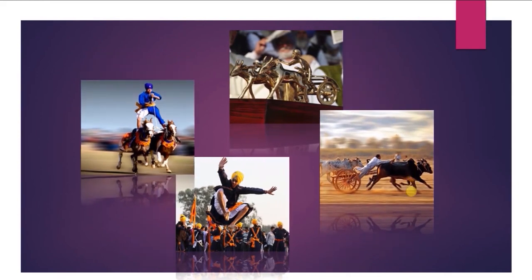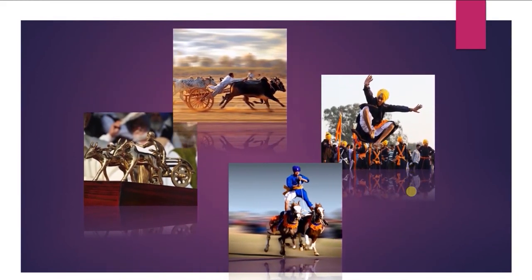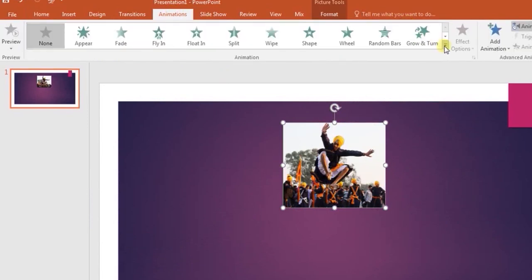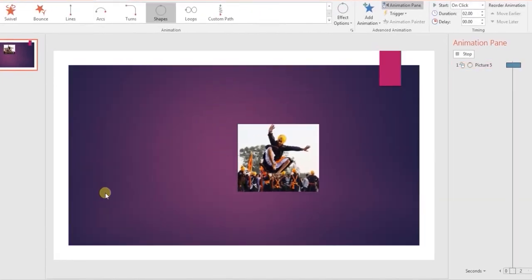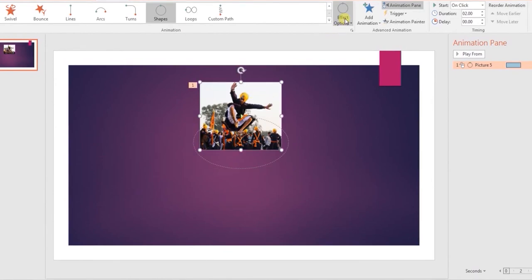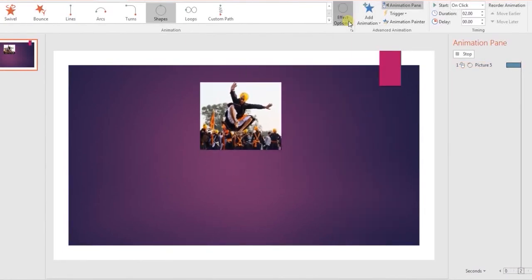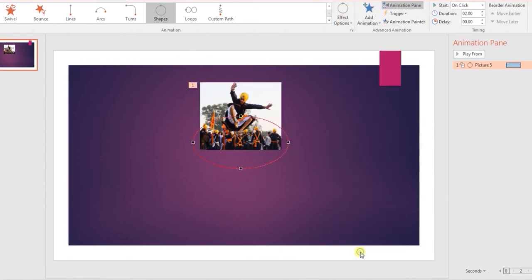Now if you want to move your images in some other order, maybe in a circular path, just follow these simple steps. Select your image and click on animations tab. From the drop down menu, select shapes under the motion path effect. Your image will start moving in the circular path. If you want to change the shape, click on effect options and a number of shapes will be available to choose from. If you want to increase the size of the path, maybe a larger circle, click on effect options and then edit points. Simply drag the corners of the path to the desired location.